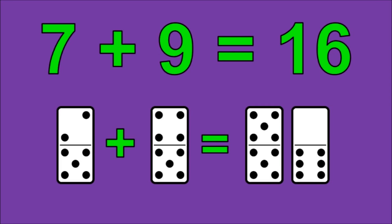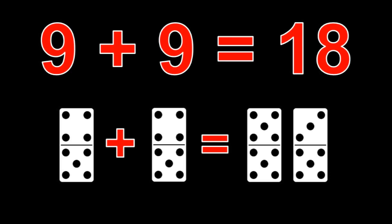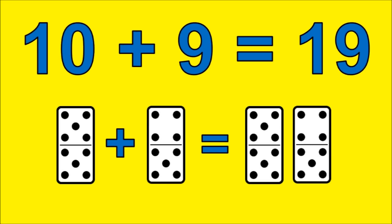7 plus 9 is 16. 8 plus 9 is 17. 9 plus 9 is 18. 10 plus 9 is 19.